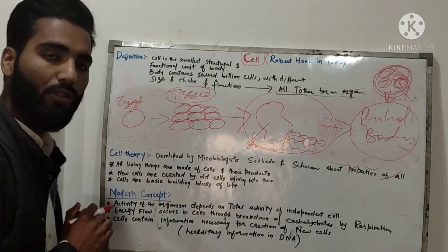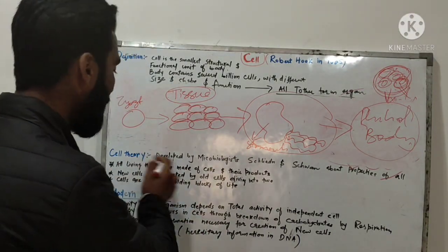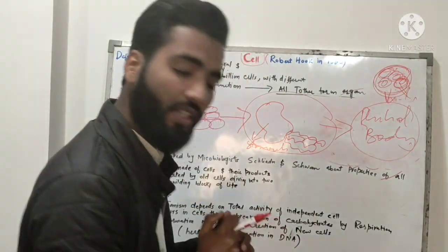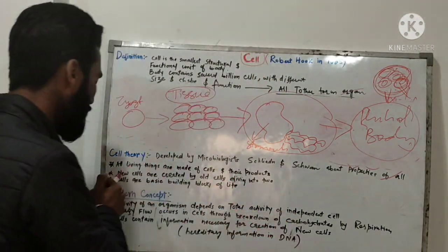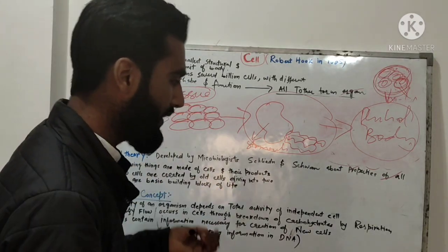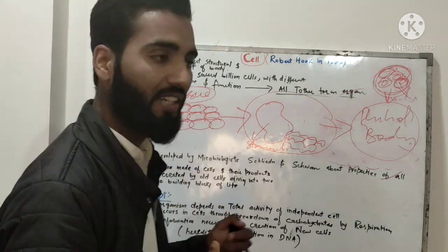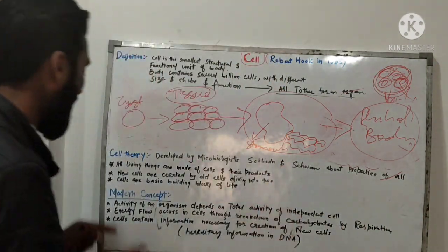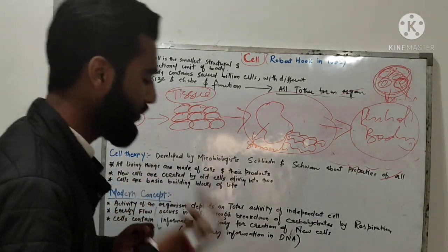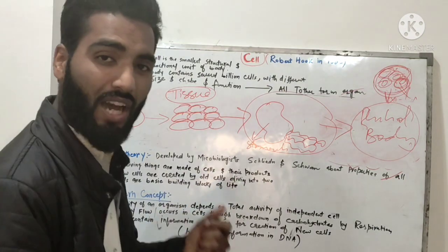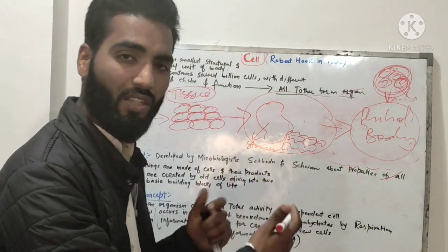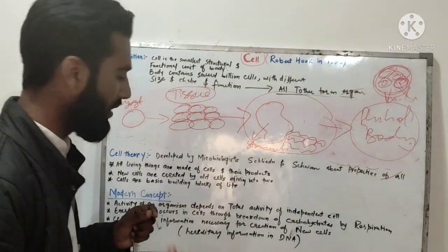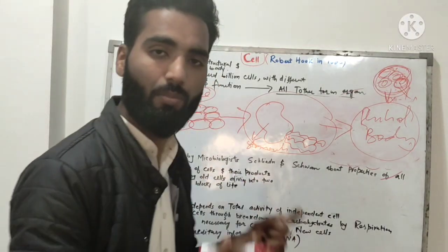Now we have to talk about cell theory. Cell theory covers the properties of all living things. All living things are made up of cells and their products. New cells are created by old cells dividing into two. These cells are the basic building blocks of life — cell to tissue to organ to whole body.